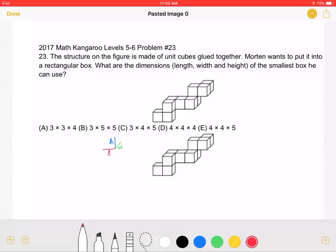This is the 2017 Math Kangaroo Levels 5-6 Problem Number 23. The structure on the figure is made up of unit cubes glued together. Moran wants to put it into a rectangular box. What are the dimensions, length, width, and height of the smallest box he can use?